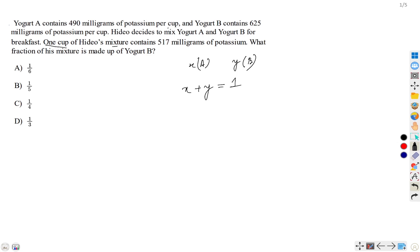Now, for the second equation, we have 517, which is the total amount of potassium he is consuming. This is 490 times x from cup A plus 625 times y from cup B.